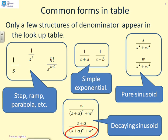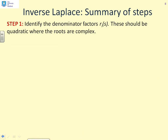Finally, if you see something like this which has a denominator (s plus a) squared plus ω squared, then that corresponds to a decaying sinusoid. You'll notice this form has complex roots. If you try to solve for the roots of (s plus a) squared plus ω squared, you will see that the solution for the roots is complex.